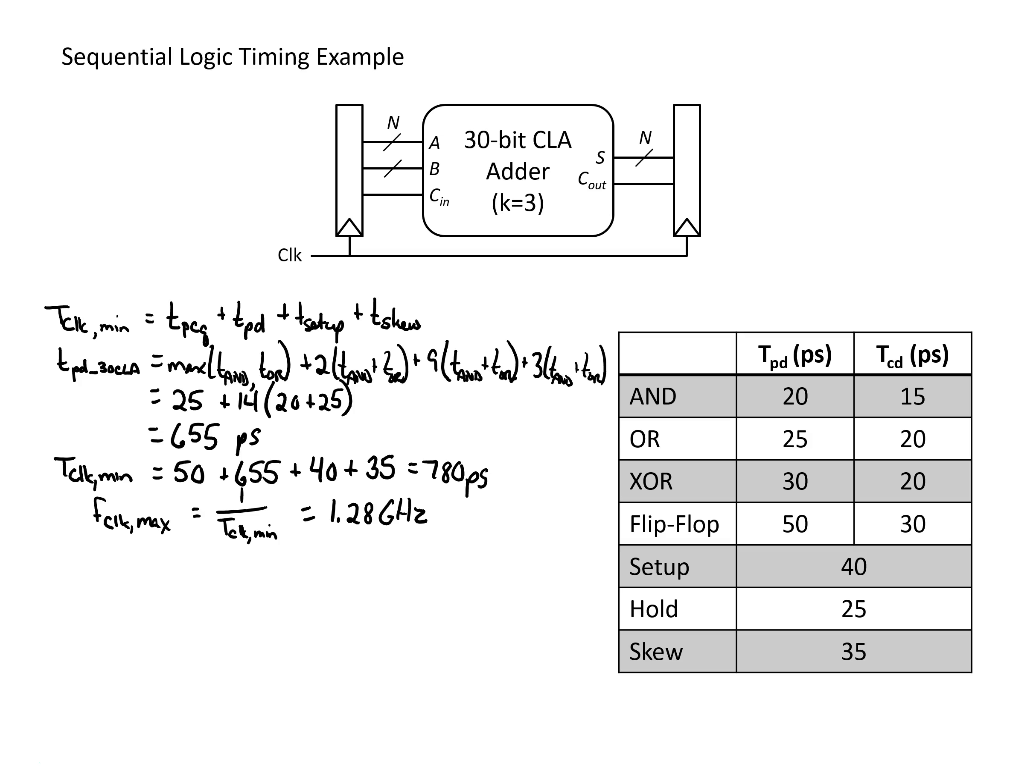That's how we look at the setup time and the maximum frequency we can run at. But we're also interested in making sure that it doesn't violate the hold time for our flip-flops. For this we need to make sure that the hold time plus any clock skew that we have is less than or equal to the minimum path through this circuit. That would be the quickest time it could get out of the flip-flop plus the quickest path through the combinational logic.